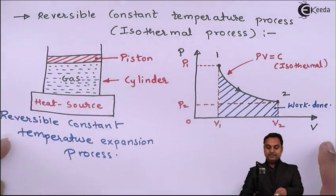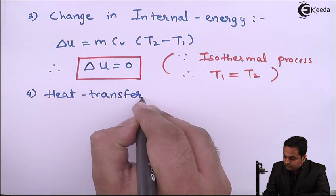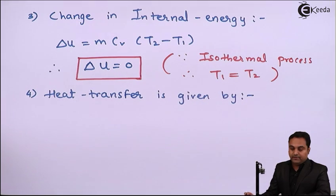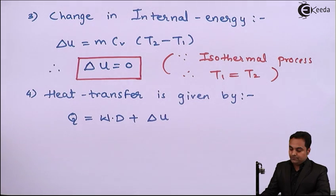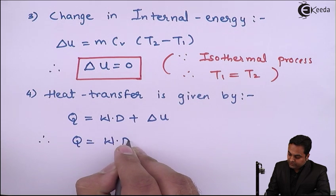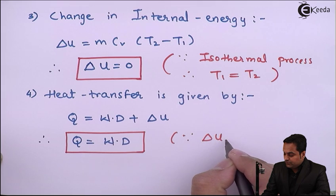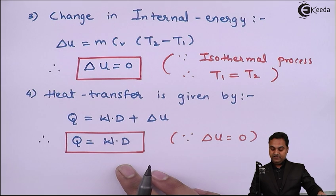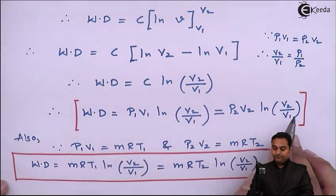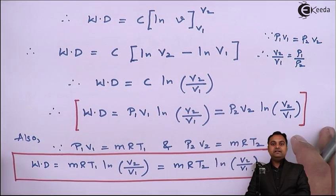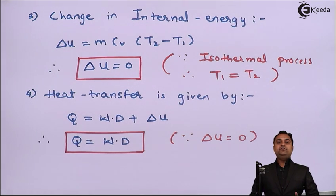Heat transfer is given by the general formula Q = W + ΔU. Since ΔU = 0 for the isothermal process, Q equals W directly — heat transfer equals work done. Therefore Q = P1V1·ln(V2/V1) = P2V2·ln(V2/V1). The amount of heat transfer equals the amount of work done in an isothermal process. This concludes our detailed look at the isothermal process.